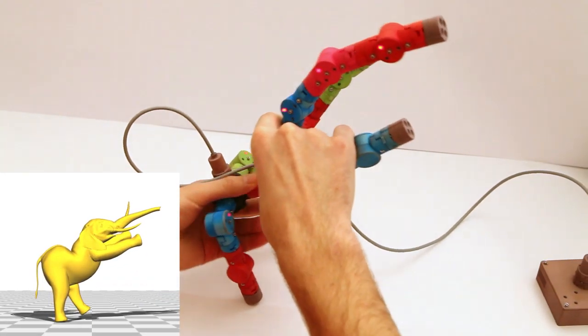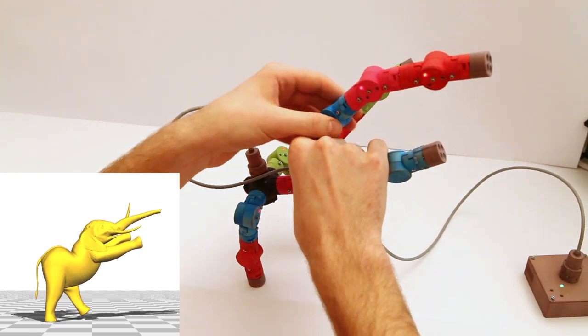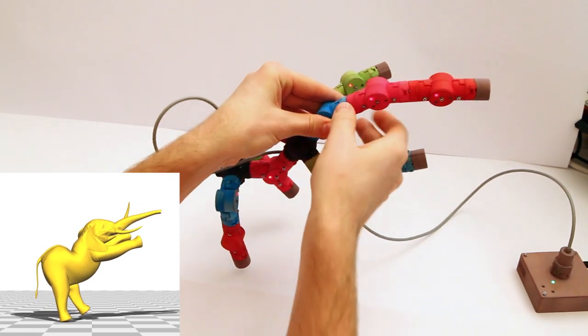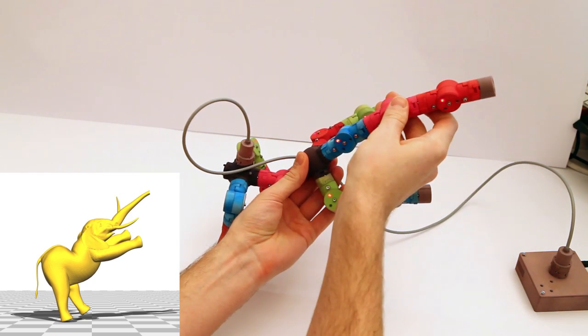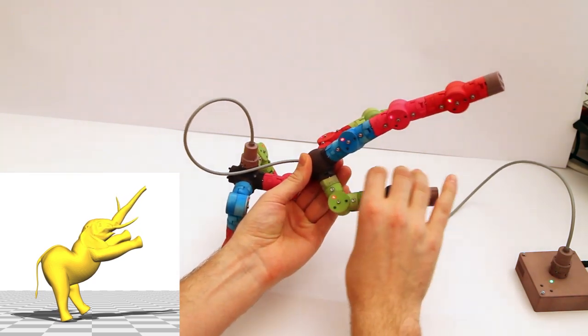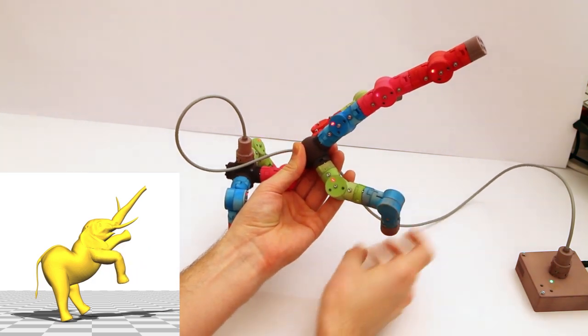We introduce a tangible input device for controlling 3D skeletons in real time. Our 3D printed mechanical joints are compact and interchangeable, allowing users to construct a device that matches the character on screen.